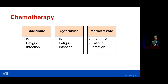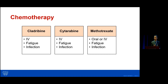For chemotherapy, the three most commonly used agents are cladribine, cytarabine, and methotrexate. Cladribine and cytarabine are given intravenously. Fatigue and infection are concerns — chemotherapy lowers your immune system and blood counts, so there's a risk of infection, though I'd say maybe 10% or less of my patients get some kind of infection; the majority do not. Methotrexate can be given orally or intravenously.